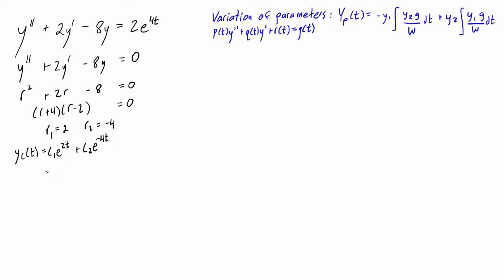And more on this form, basically, we can also rewrite this as C1Y1 plus C2Y2. So we can pick out here that Y1 is equal to e to the 2t. And Y2 is equal to e to the negative 4t.